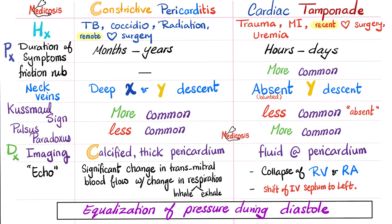Now to the best part: the comparison. Constrictive pericarditis versus cardiac tamponade — history. The patient with constrictive pericarditis probably has TB, disseminated coccidioides, radiation, or distant remote cardiothoracic surgery way in the past — months to years. However, cardiac tamponade is more acute: recent surgery, trauma, myocardial infarction — hours to days only.